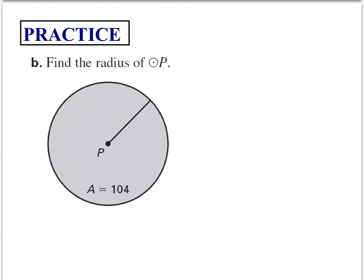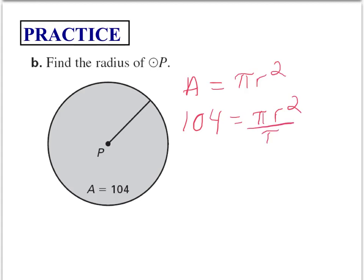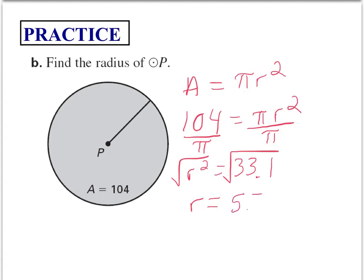If we know the area of a circle, we're able to find the length of the radius. We have our equation area equals pi times the radius squared, and we know the area is 104. We divide both sides by pi, and we have r squared equals 33.1. Then we take the square root of both sides and get r equals about 5.7.